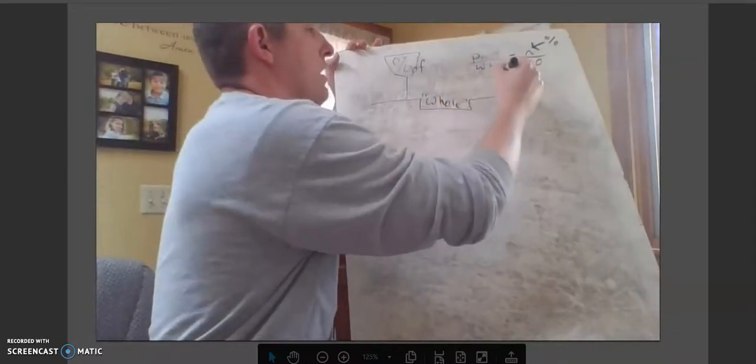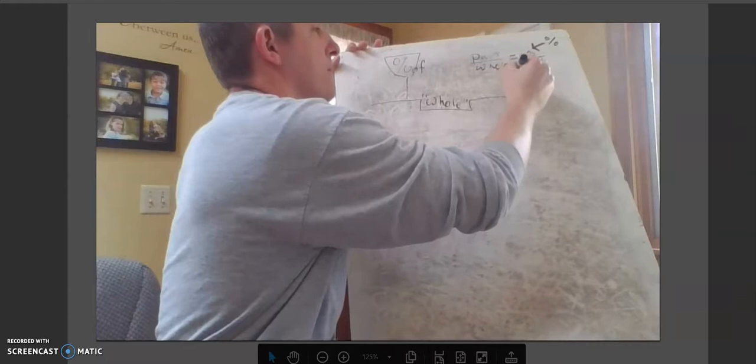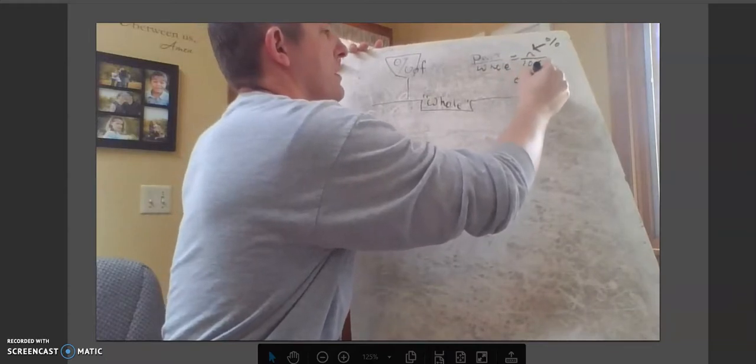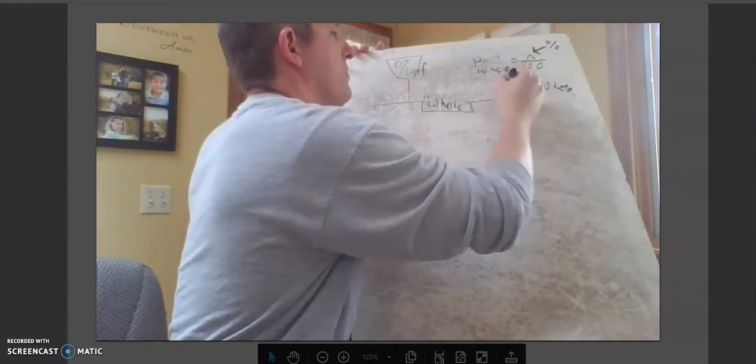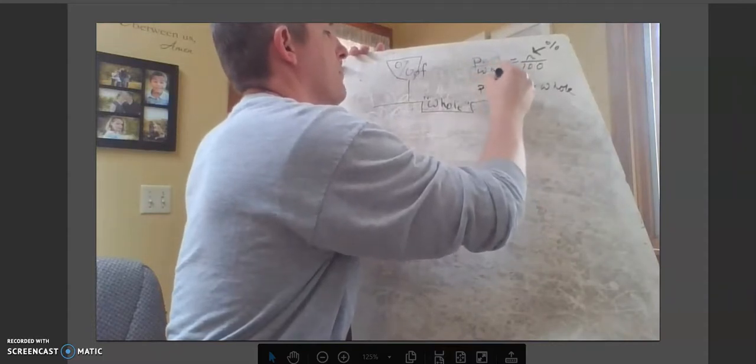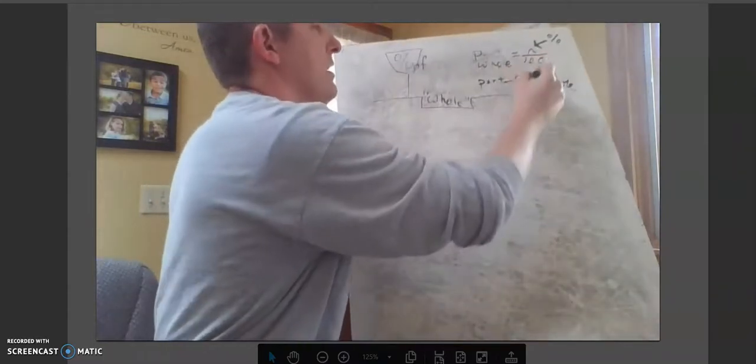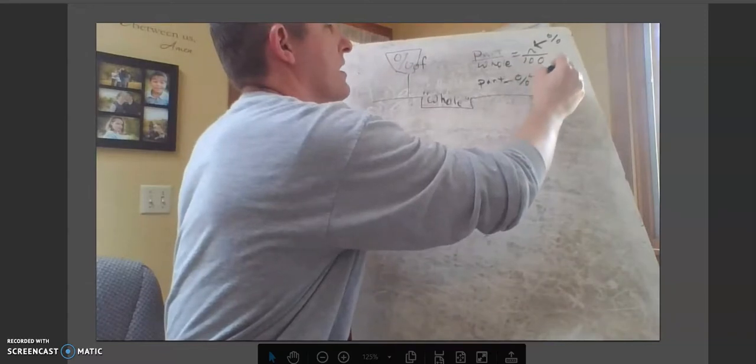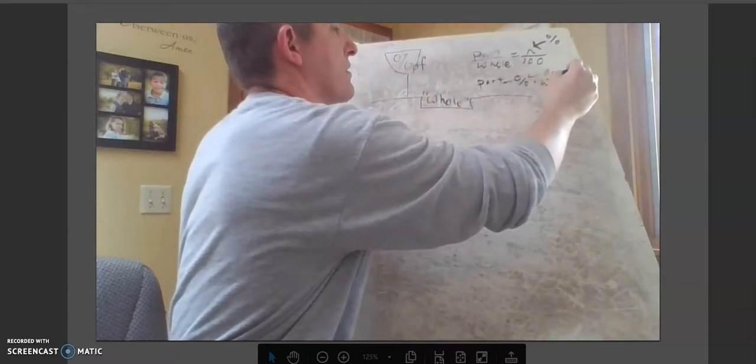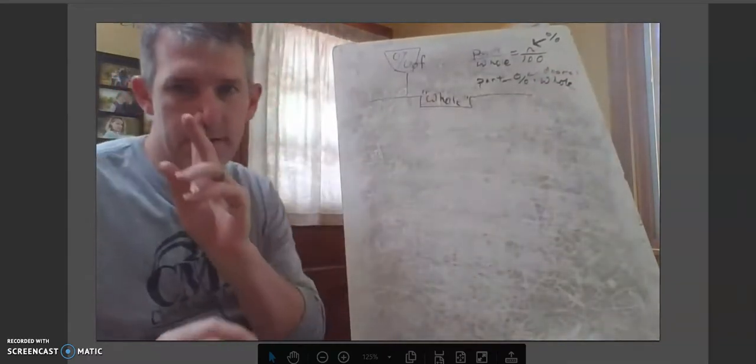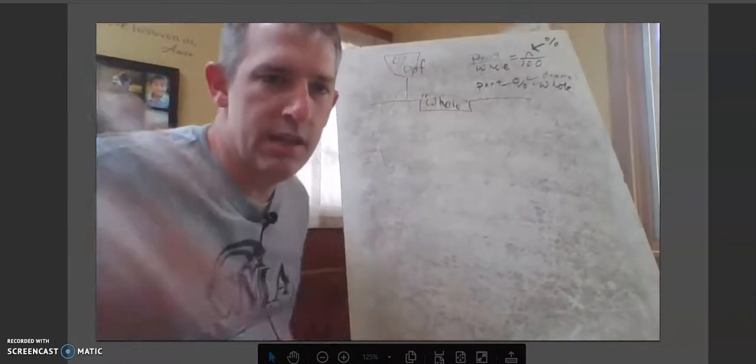Now, that only works if we use this proportion. Part over whole equals the percent over 100. Or you could do percent times whole equals the part if you're more of an equation kind of person. But remember, here this percent needs to be written as a decimal.